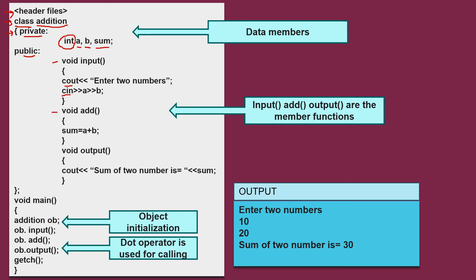Next is void add function. In add function, you are getting the sum of A plus B in your sum variable. Then is the void output function. This is for printing the result. Cout sum of two number is sum. This is the end of your class.